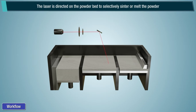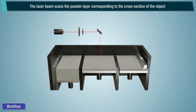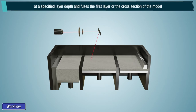The laser is directed onto the powder bed to selectively sinter and melt the powder. The laser beam scans the powder layer corresponding to the cross-section of the object at a specified layer depth, and fuses the first layer or cross-section of the model.